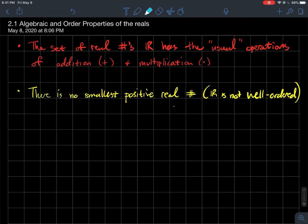So to get into some of the other interesting properties that we'll be using a lot, one result that we'll need is there's no smallest positive real number. So another way to say that is that the set of reals, it's not well ordered. So how would you prove such a thing? This is where something like a proof by contradiction might come in handy.